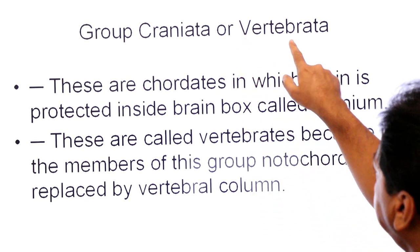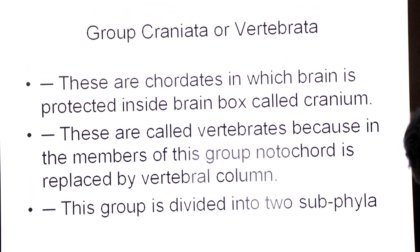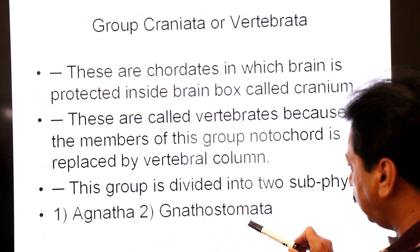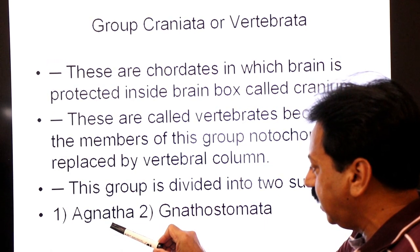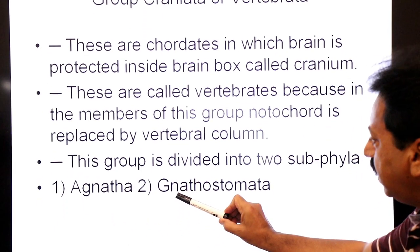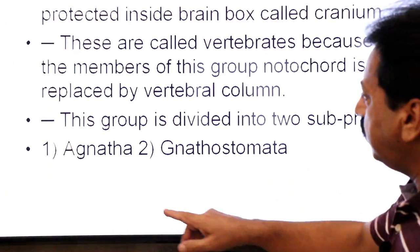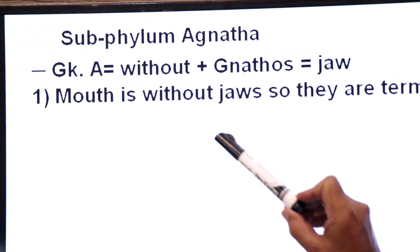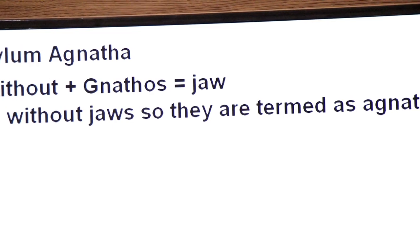This group is divided into two subphyla: number one Agnatha, and number two Gnathostomata. 'A' means without, 'nathos' means jaws — these are vertebrates without jaws. Their mouth is not bounded by jaws. In Gnathostomata, 'gnatos' means jaws — they have jaws in their mouth. We will start with Agnatha. The Greek roots: 'a' means without, plus 'nathos' means jaws — mouth is without jaws.